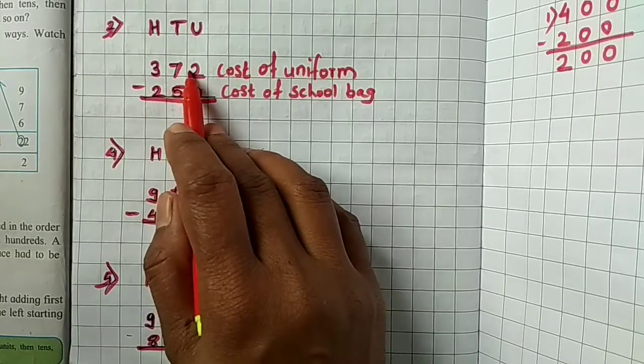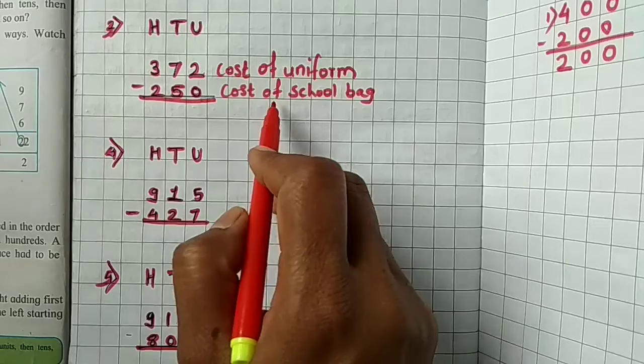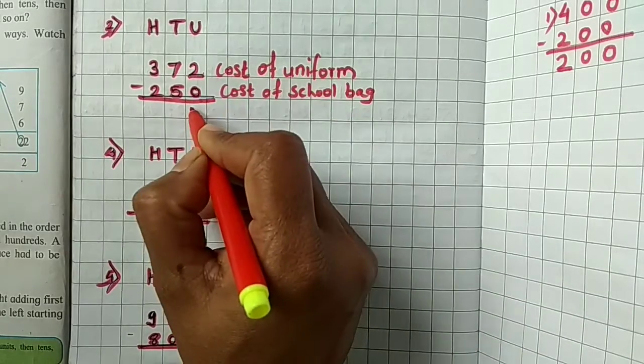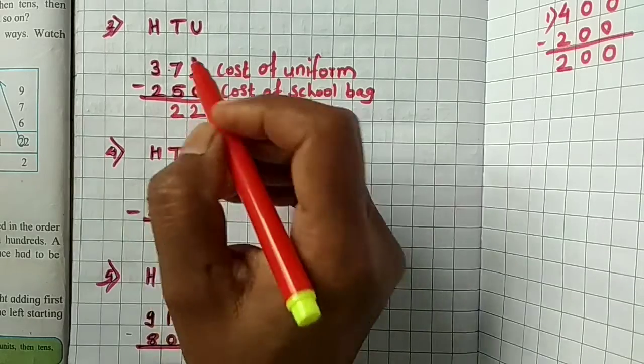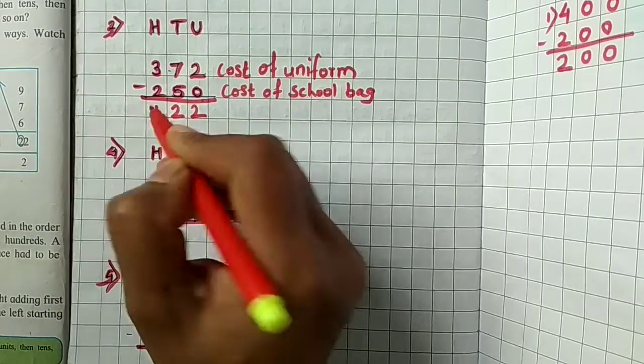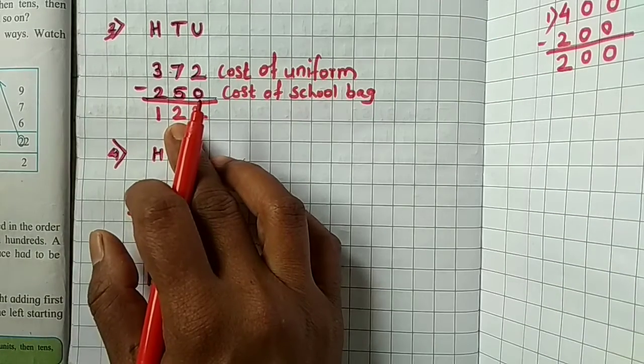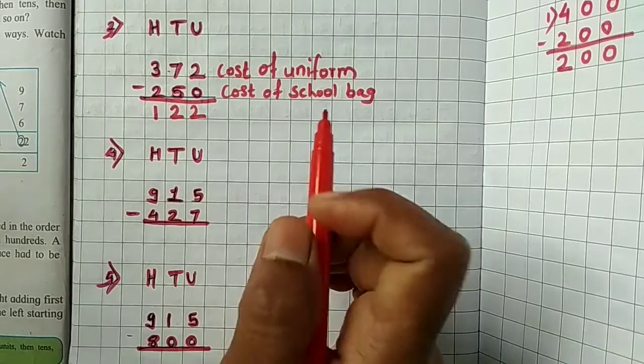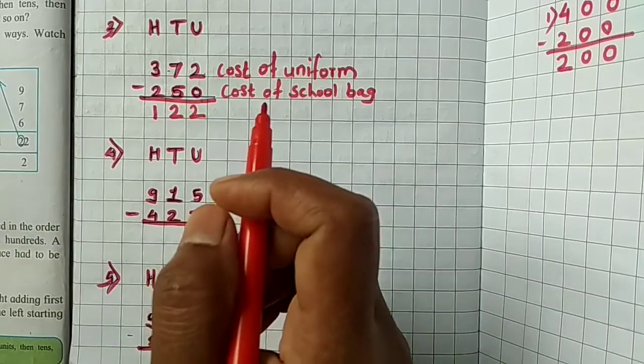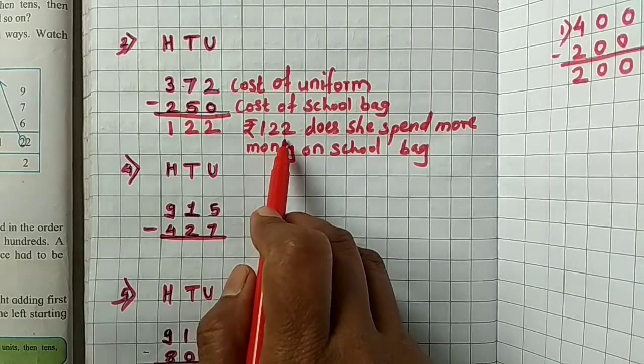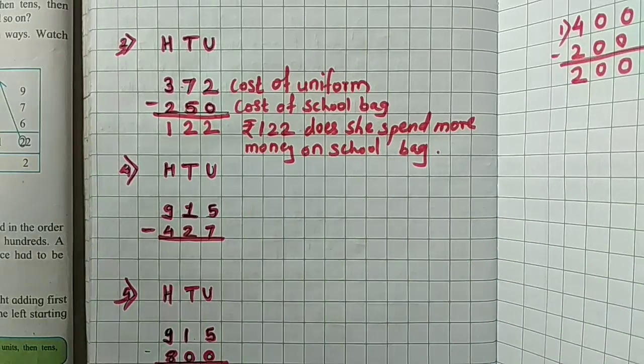First, 372 cost of uniform and 250 cost of school bag. So 2 minus 0 we get as 2. 7 minus 5 we get as 2. And 3 minus 2 we get as 1. So how many more money she spent? 122 rupees she spent more money on uniform. So rupees 122 does she spend more money on school bag. Let's see another example.